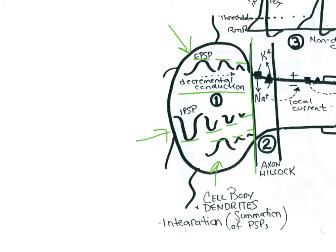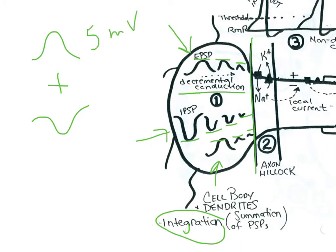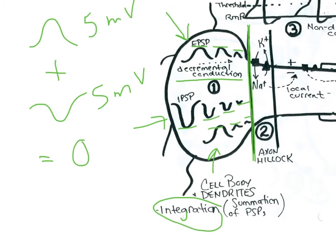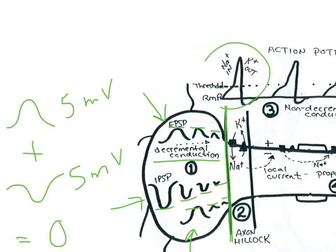The fact that cell bodies are integration sites means we have summation of these responses, and this is just like math. If we have an EPSP and we add it to an IPSP, depending on the amplitude — if this was five millivolts and this was five millivolts — we're going to end up with zero. All of the postsynaptic responses are added up together, and then at the axon hillock there's either going to be a superthreshold or subthreshold stimulus. If it is above threshold, we are going to elicit an action potential. If it was below threshold, we would not get an action potential.